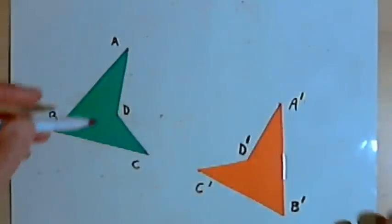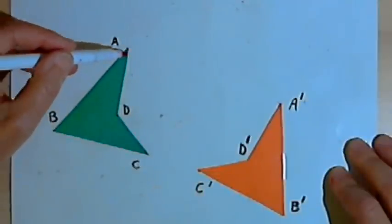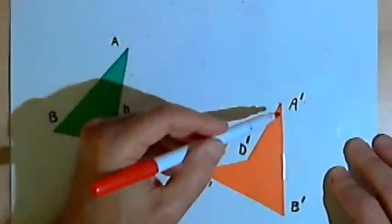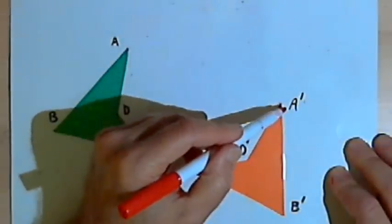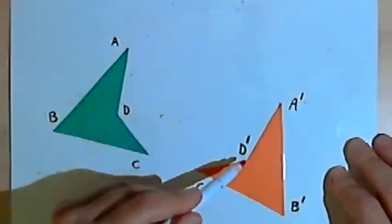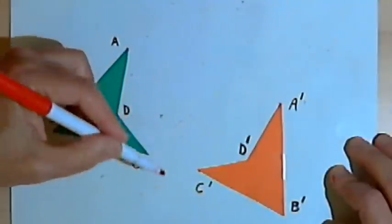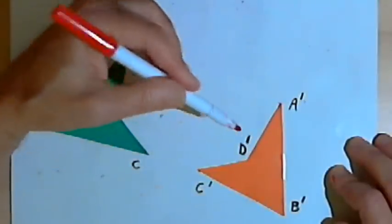So I've got two quadrilaterals here. I'm going to use the green one, ABCD, as the original image, and I'll use the orange one, A prime, B prime, C prime, D prime, as its reflected image. What I want to do is find the line that was used to create the reflection.